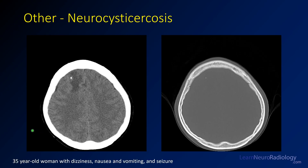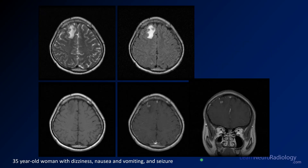Here is a case: a 35-year-old woman with dizziness and nausea. In the right frontal lobe, you see an area of edema with a central area of calcification. On bone windows, you can see that calcification in the frontal lobe. On MR, there's edema with a T2-dark central area on both T2 and FLAIR, and on post-contrast there's a thin rim of enhancement with surrounding edema. With that calcification, this is different from abscesses — you should be thinking about cysticercosis.